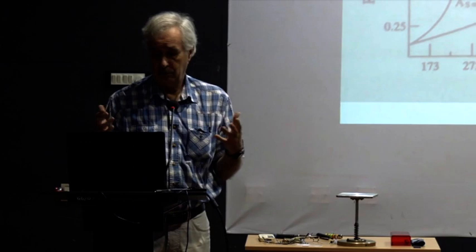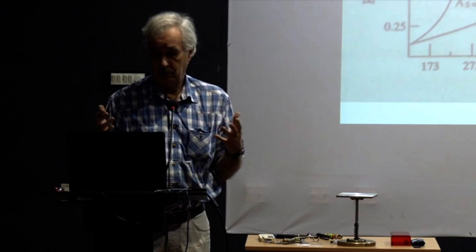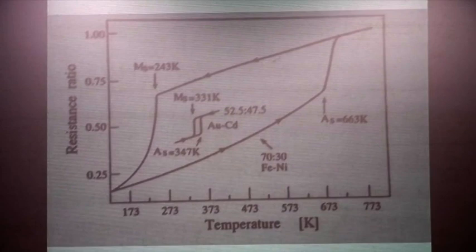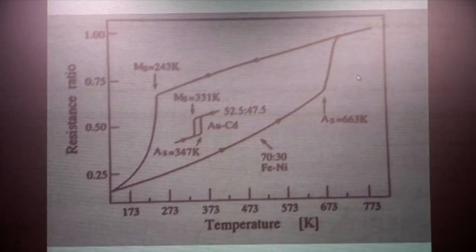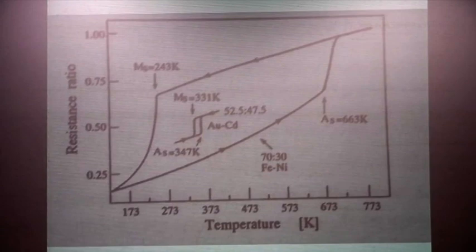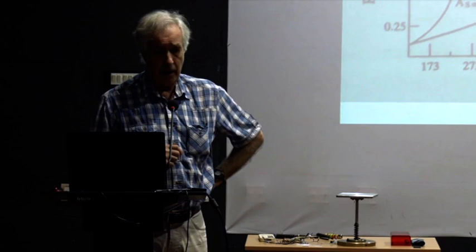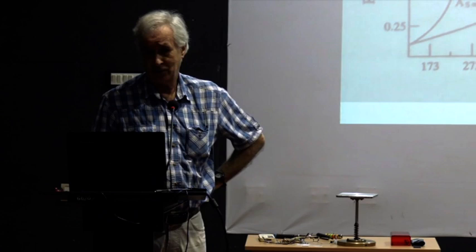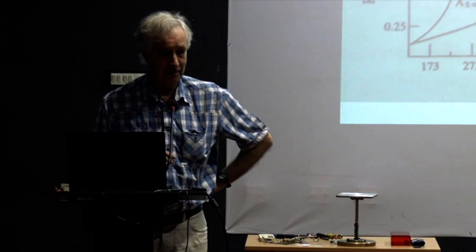This data gives you an idea of what the width of transitions can be. We have 70-30 iron nickel, and you can see that the martensitic transition width is tremendous — the MS temperature is at 243 K, and when you go back up the austenite start temperature gives a hysteresis width of about 400 K. It's immense. You have the martensitic transition in iron nickel, but you can't use it as a shape memory alloy — that's the problem.